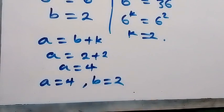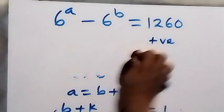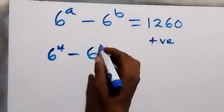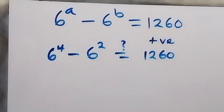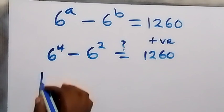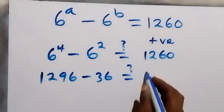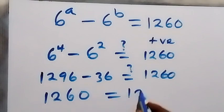To confirm, we substitute back into the original equation: 6 raised to power 4 minus 6 raised to power 2 equals 1260. 6 to the 4th power is 1296, and 6 squared is 36. So 1296 minus 36 gives us 1260, which equals 1260. The left-hand side equals the right-hand side — confirmed!